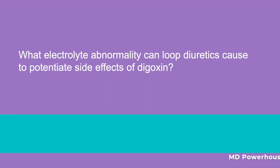What electrolyte abnormality can loop diuretics cause to potentiate the side effects of digoxin? Hypokalemia.